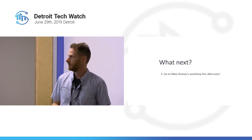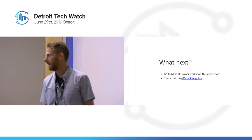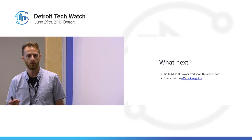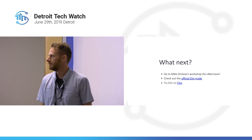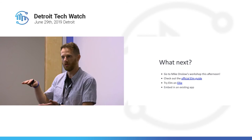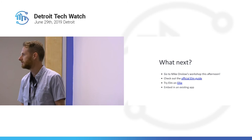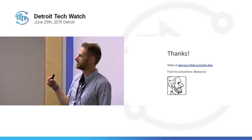I definitely recommend checking out Mike Onslow's Elm workshop this afternoon. Outside of that, go into the official Elm guide — it's written really well, written by the creator of Elm, so you get insight into why he made some of the decisions he made. You can also try it online — there's an editor called Ellie, kind of like JS Bin or JS Fiddle. And it's low risk if you embed it into an existing app: if you don't like the way it works, you can always pull it out. It's not a big investment or a bet-the-farm Greenfield app. The slides are at absences.gitlab.com/elm-hyphen-dtw.